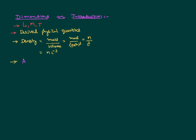For example, to write the dimensional formula of acceleration — we know acceleration is defined as rate of change of velocity, so I can write it as velocity divided by time. Velocity can be further expressed as rate of change of displacement, so velocity equals displacement by time. There is one more time in the denominator, so together it becomes time squared. Displacement is nothing but length. Dimensionally, displacement is expressed as capital L and time as capital T. So, acceleration has a dimensional formula of L T power minus 2, representing acceleration in terms of fundamental quantities like length, time and mass.